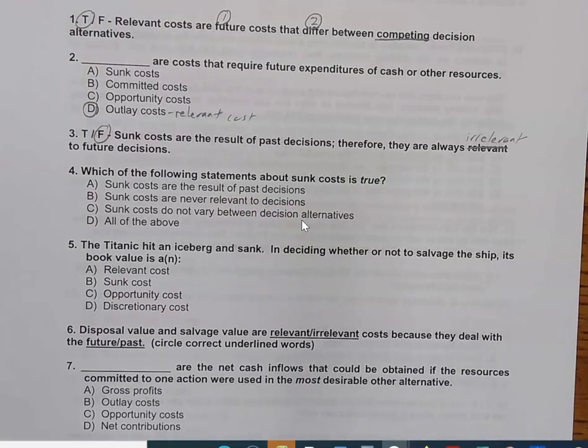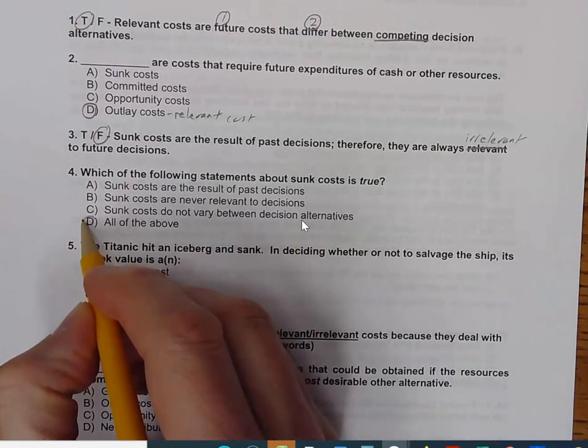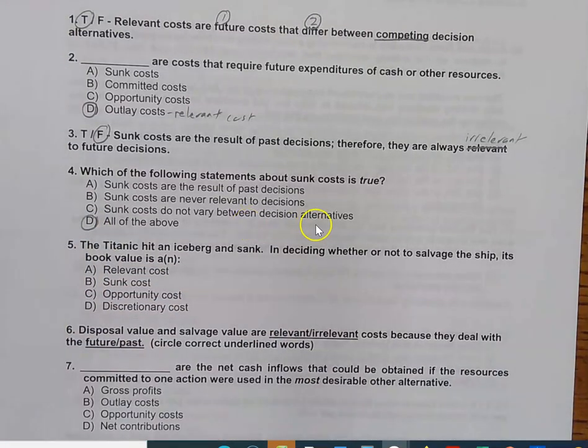The answer is D. Now, I don't particularly care for answer choice C. There is no decision when we're talking about a sunk cost. There was a decision, but we've already made the decision. So, at one point, there probably was a difference between decision alternatives. We made our choice and incurred a sunk cost, and hopefully one that benefits us.